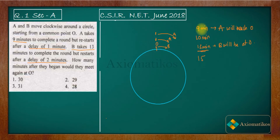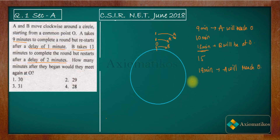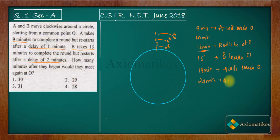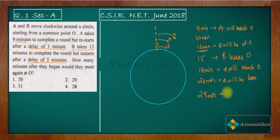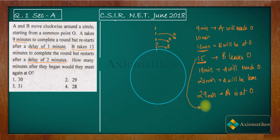A reaches O after 19 minutes. B starts its second round at 15 minutes, leaving position O. Now for the third round: after 20 minutes A will leave O, and to complete that next round A will reach O again at 29 minutes. So A is at O at 29 minutes.